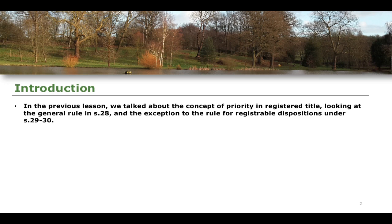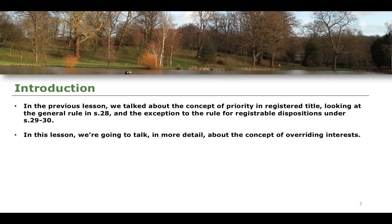The previous lesson talked about the concept of priority as it relates to registered title — the general rule in Section 28, which is that when there is a registrable disposition, like for example the conveyance of property, there is no effect on priority. And then this is of course with the major exception of any of the rules that exist in Sections 29 and 30. We focused most of our attention on Section 29.